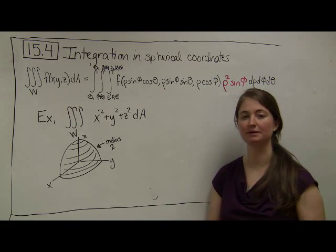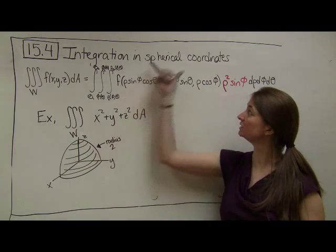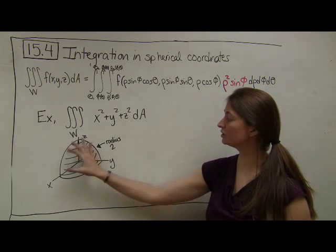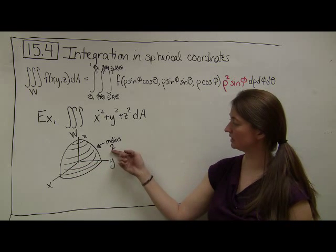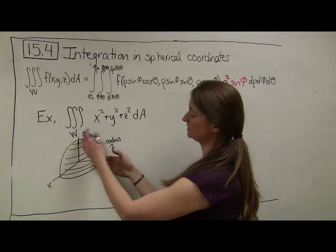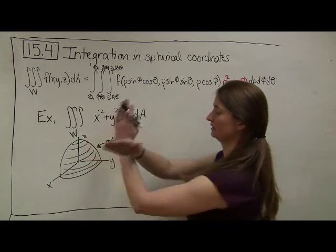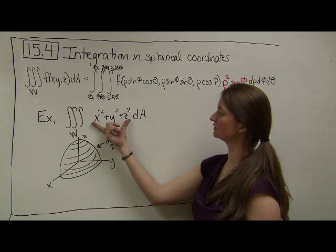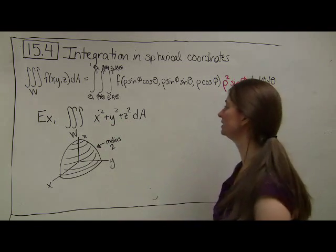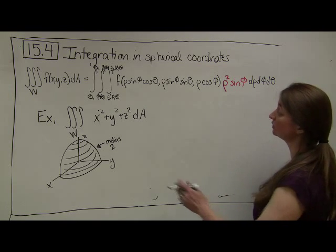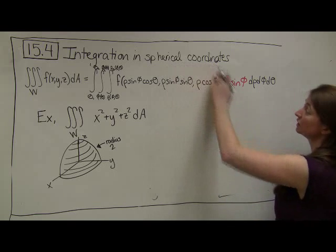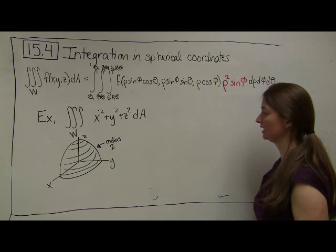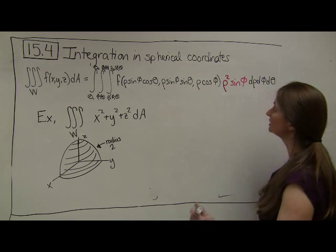Now let's look at an example of computing a triple integral using spherical coordinates. Let's say my volume W is given by a portion of a sphere — only the top portion, of radius 2, that's in the positive x, y, z octant. That's the first octant of our coordinate system. And let's say I'm integrating over the function x squared plus y squared plus z squared. My first step is to convert the bounds of integration into spherical coordinates — a good call because this is part of a sphere.